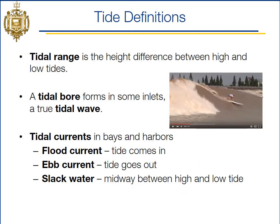Tidal range is the difference between the high and low. Tidal bores are an interesting phenomenon that occurs in some inlet-type areas, creating a wave that lasts for a long time — people like to surf them. You can find cool videos of tidal bores in narrow, long inlets like fjords in Norway. Flood current is when the tide is coming in, ebb current is when the tide goes out, and slack water is the period between high and low when the current changes from a flood to an ebb.